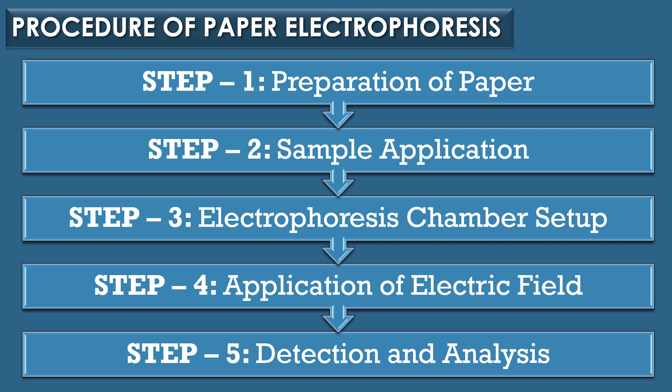Step five — the final step — is detection and analysis: after electrophoresis, the paper strip is removed. The separated molecules can be detected using suitable staining or detection techniques and their migration distance can be utilized for analysis. The separated particles are detected using various methods like staining, UV light, or radioactivity.